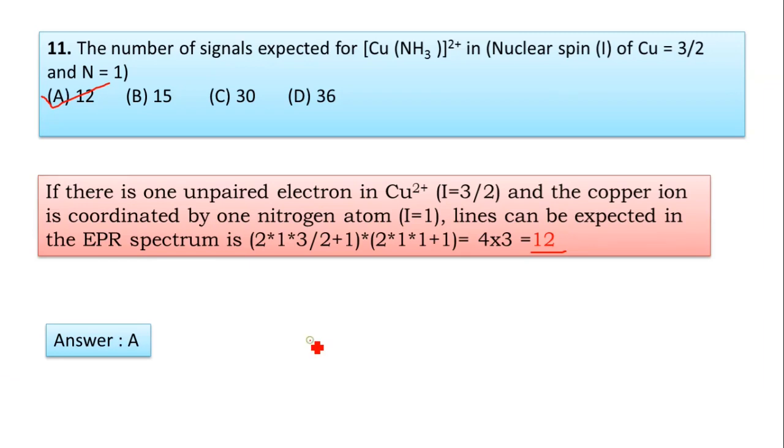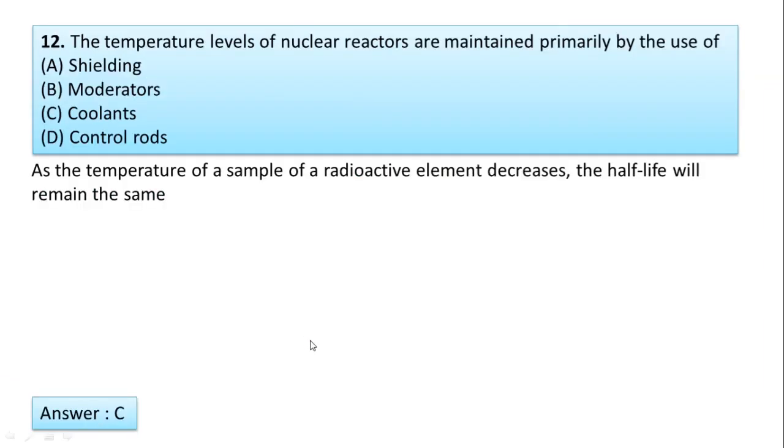Next question: The temperature level of nuclear reactors are maintained primarily by the use of shielding, moderator, coolant, or control rods. As the temperature of a sample of radioactive element decreases, the half-life will remain the same. Hence, the temperature level of nuclear reactors are maintained by the use of coolants. Answer is C.